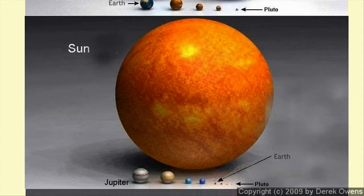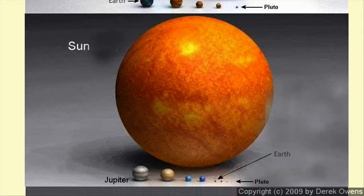And then if you scroll on down, you can see all of the planets compared to the Sun. So the Sun is huge compared to the planets, a little over a hundred times the diameter of Earth, or a million times the volume of Earth.